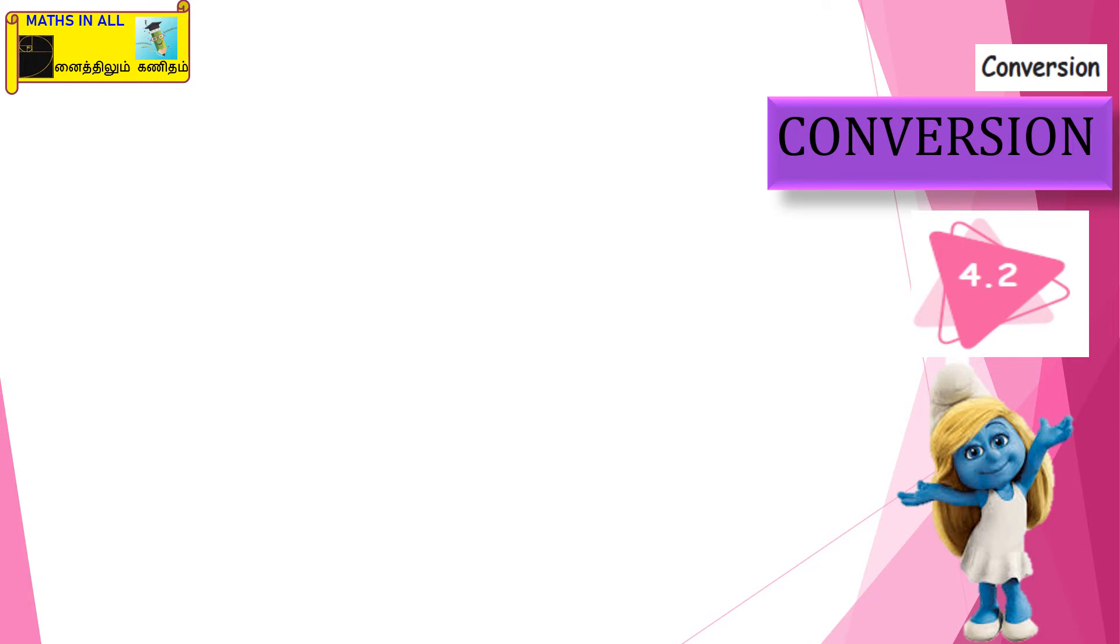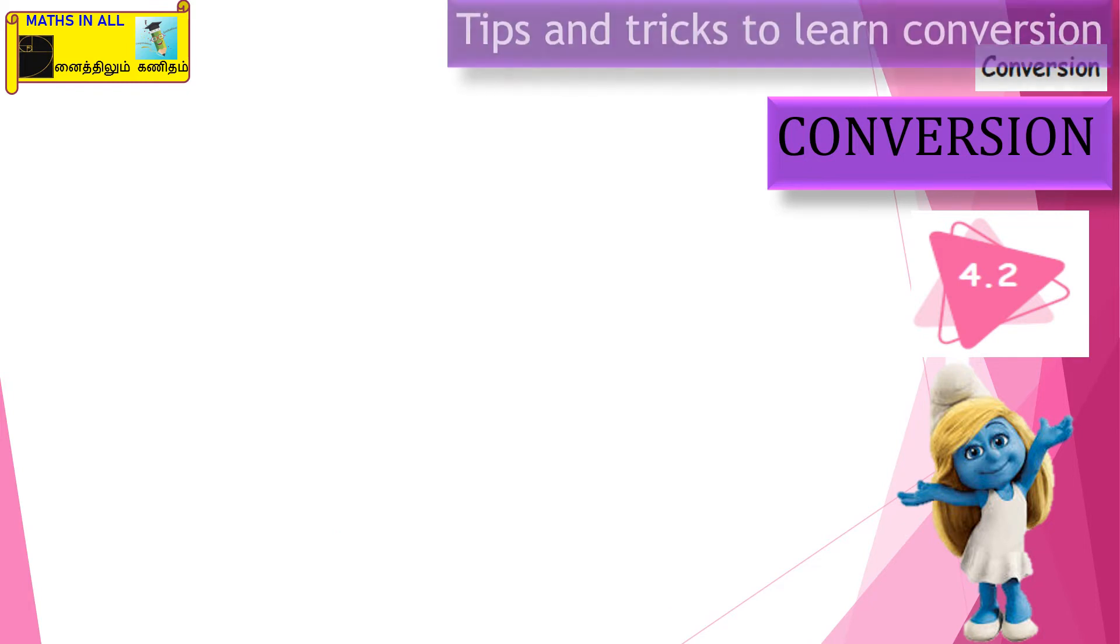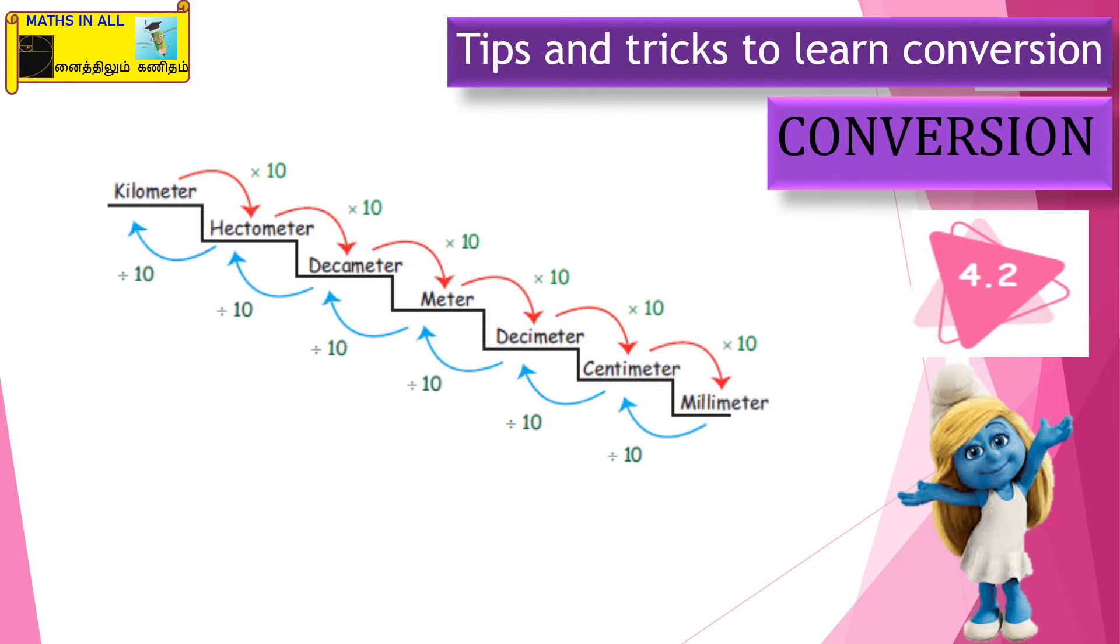One more thing I have to say here - yes, this is also one trick. Suppose in between if they ask from hectometer to centimeter, see in between how many tens? Three tens, so sure we have to multiply with thousands only. So wherever they ask, we have to follow this method, it will be easy.